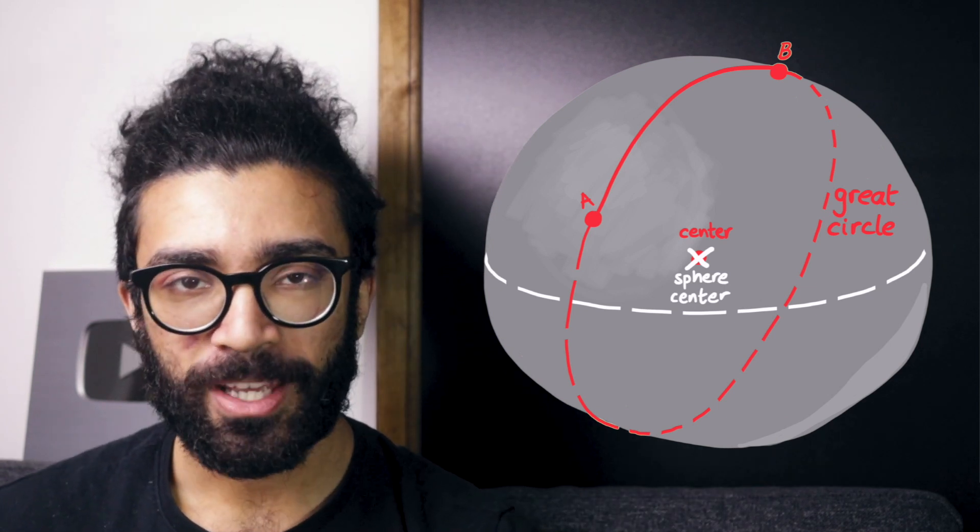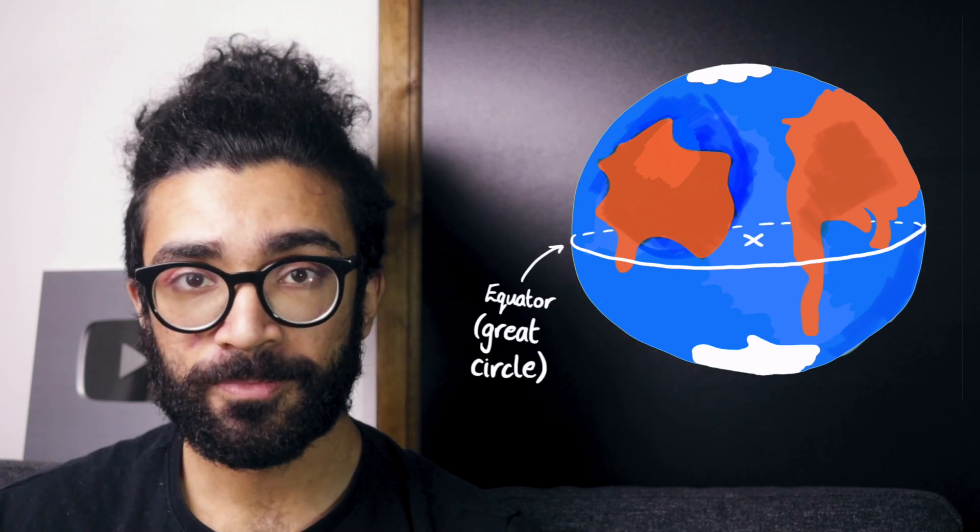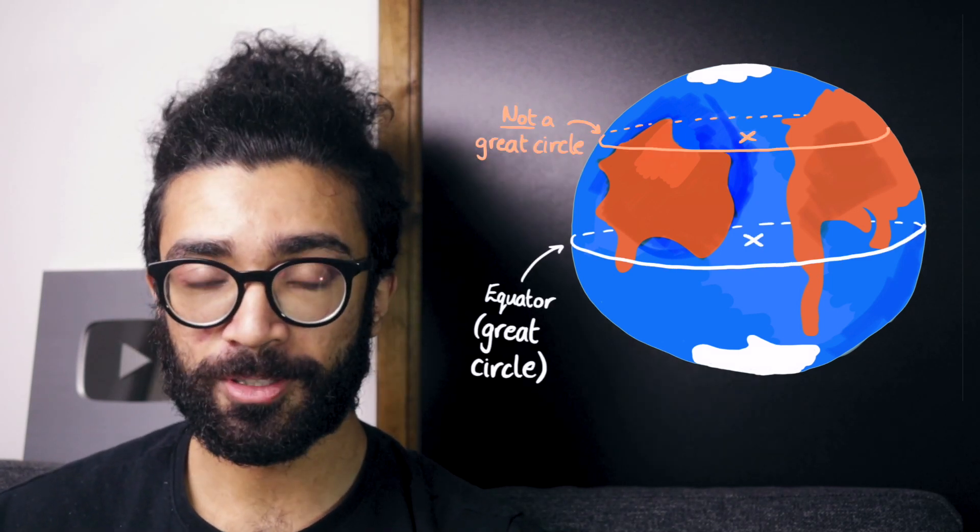As an easy way to remember this, if the surface that we happen to be considering happens to be the surface of the Earth, then the equator would be a great circle, but any of the other lines of latitude would not.